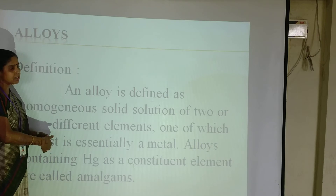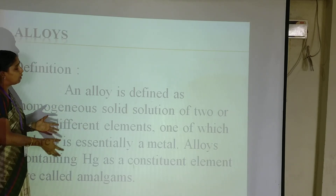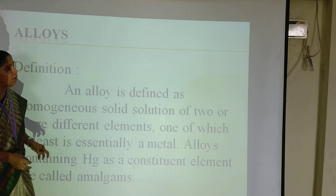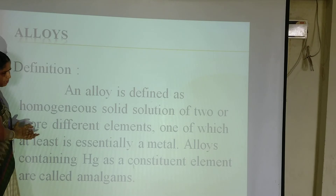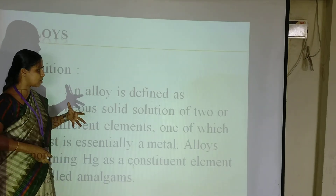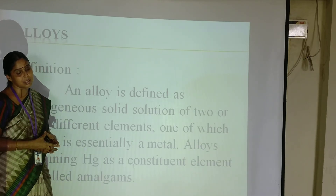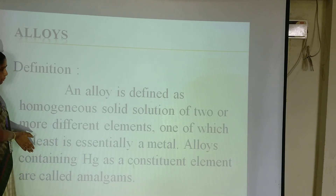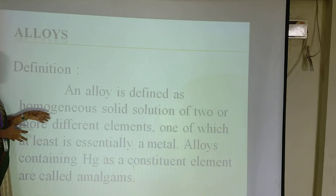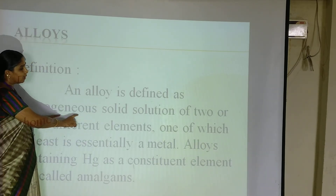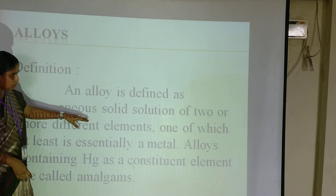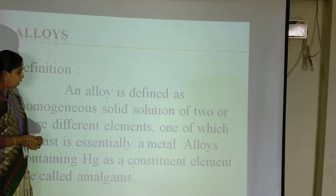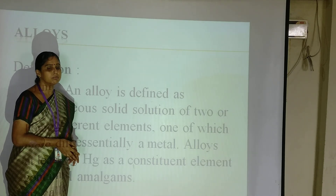Now we are going to the next area — alloys. Phase rule and alloys are combined because from the phase diagram it is possible to calculate the correct composition of alloys. An alloy is a solid solution. The best example of alloys is gold — what we get is not pure gold but a combination of gold and copper. Solid solution means metals are converted into liquid state, mixed together, and then we get a solid. This combination is of two or more elements, and at least one should be a metal.